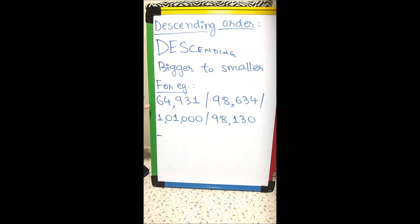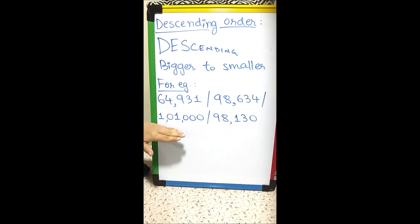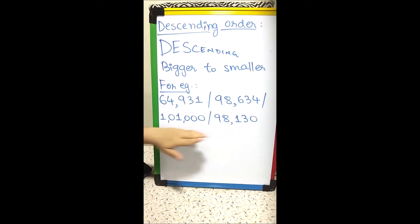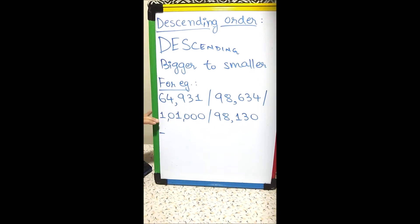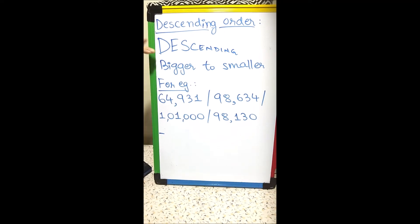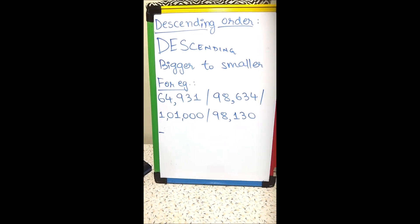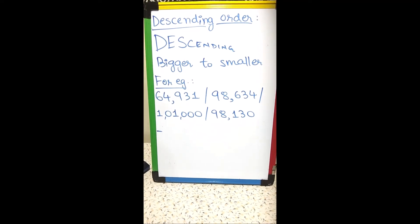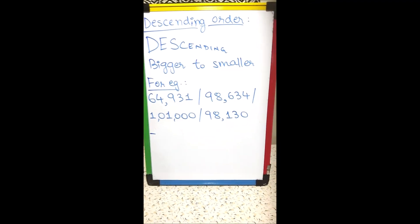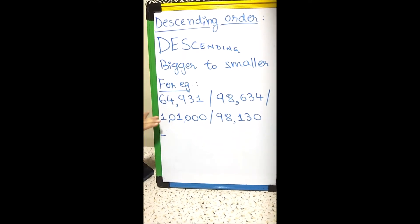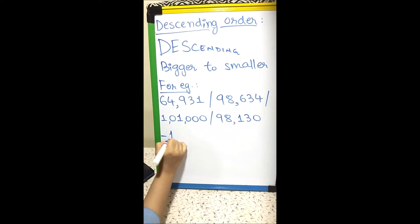Let us count the digits: five digit, five digit, six digit, and five digit. So obviously the six digit number is the greatest. Since we are arranging in descending order, students please check the order you are arranging. So 1,01,000 will come first as it is the six digit number and greatest of all.